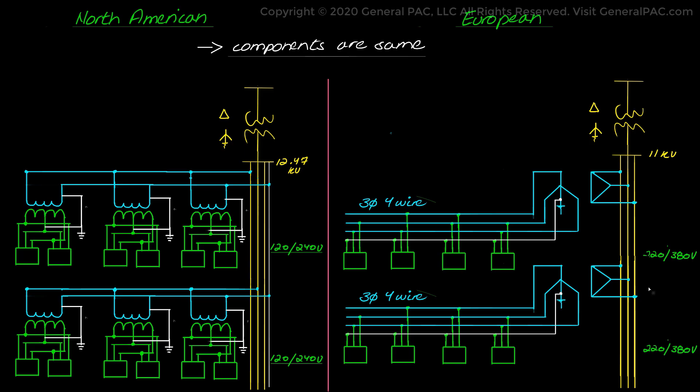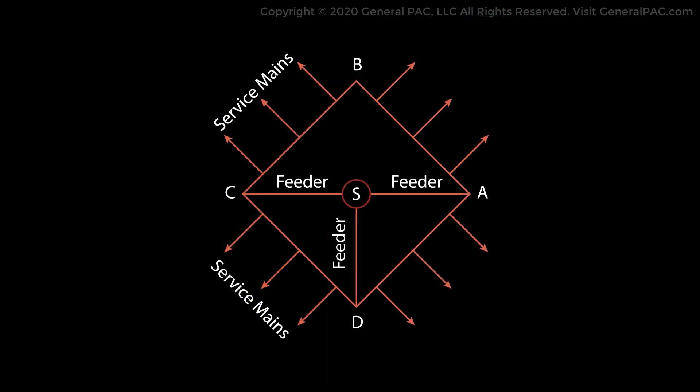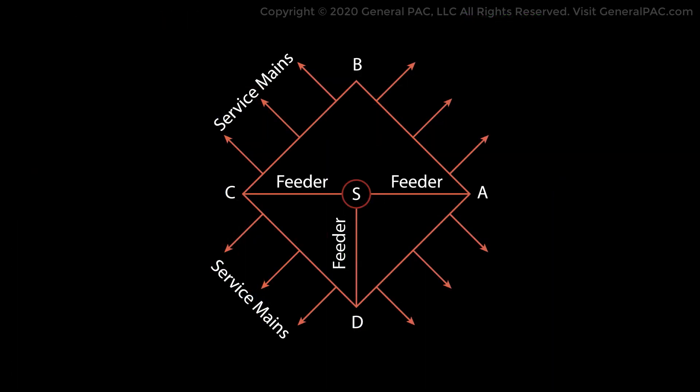Generally speaking, an electrical distribution system at the secondary stage consists of three distinguishable conductors: feeders, distributors, and service mains. A feeder, also called a mainline, is the backbone of the distribution circuit which connects the substation or localized generating station to the area where power is to be distributed. Current remains the same throughout a feeder because it supplies current without being tapped at any intermediate point.